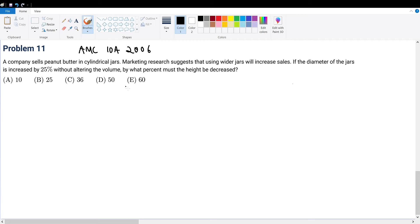The diameter is increased by 25%. We're trying to find how much the volume must be decreased. What is the volume formula for a cylinder? That would be πr²h.